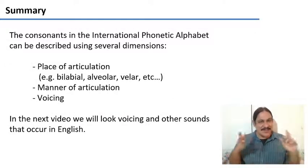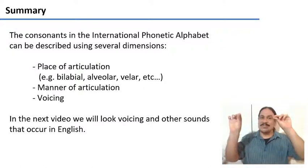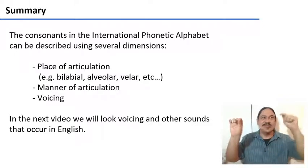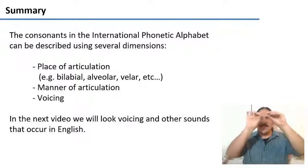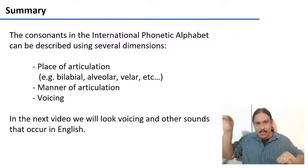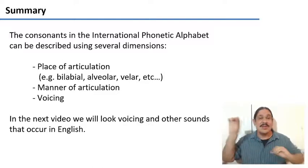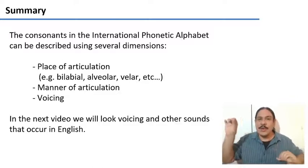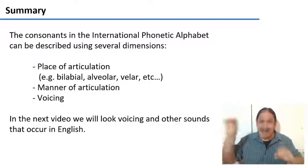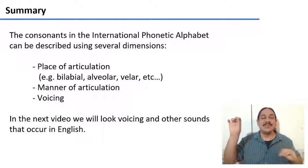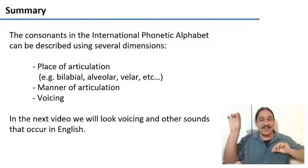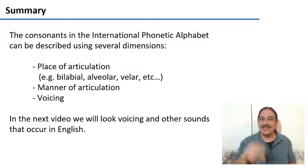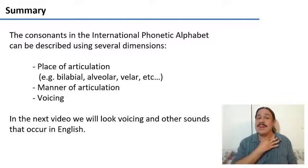So the International Phonetic Alphabet has place of articulation — labial, velar, and so on — and manner of articulation — stops, fricatives, nasals, approximants, and so forth. These are two important ways in which we describe consonants. In the next video we'll look at the third coordinate: voicing, which is whether your vocal cords are vibrating or not.